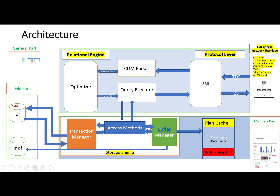In the SQL Server architecture, this is the client part which sends the request to the server. In the server, this request is handled by the protocol layer. The protocol layer accepts the request through TDS packets. The client sends the request to insert into TradingDB.hr.country table, selecting CID and CNAME from another database's country table.